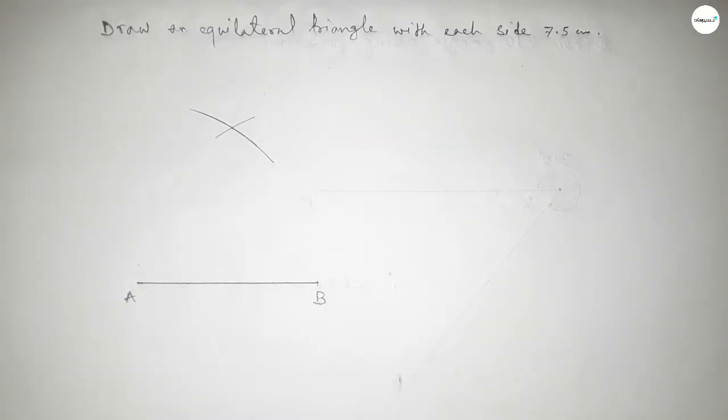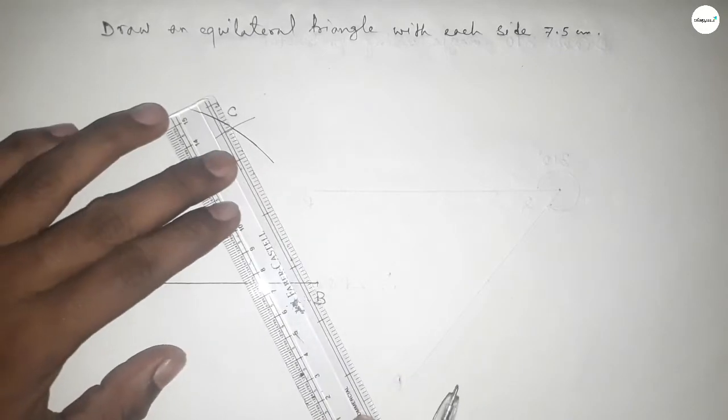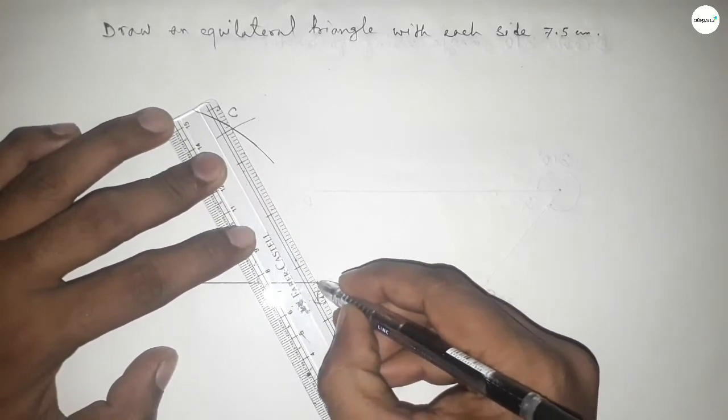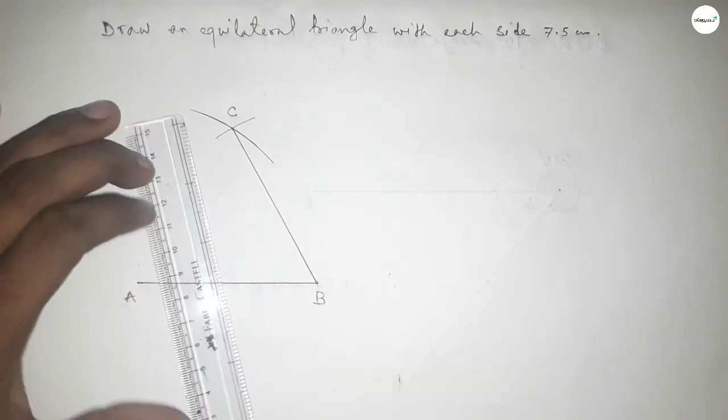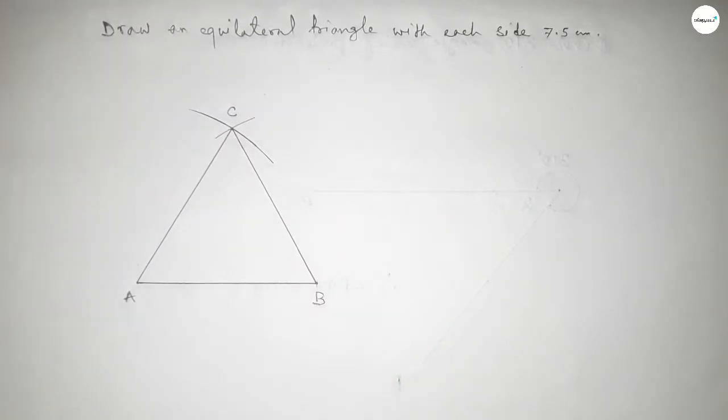Now joining this side and joining this side to get an equilateral triangle with each side 7.5 centimeter.